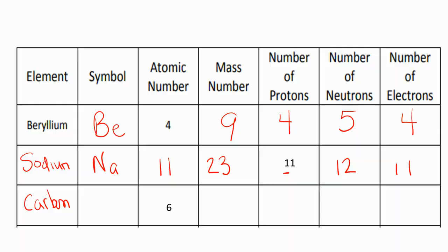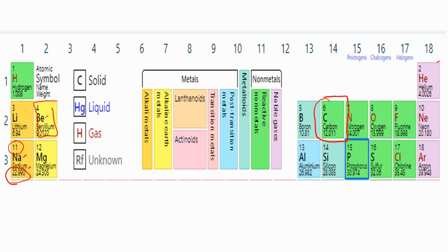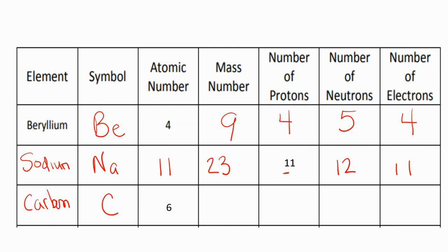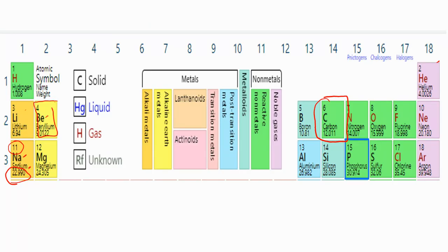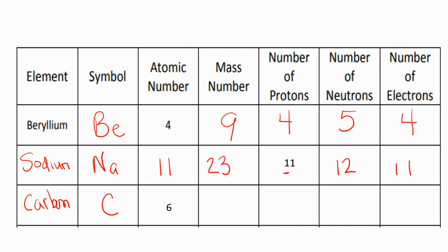The symbol for carbon is C. The mass number for carbon is right here. It's 12. So I know the atomic number is 6. The mass number is 12.